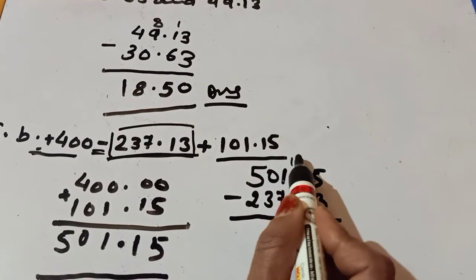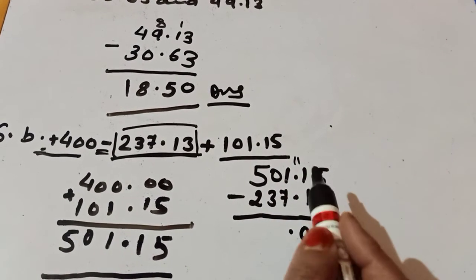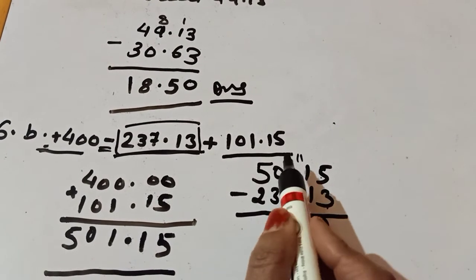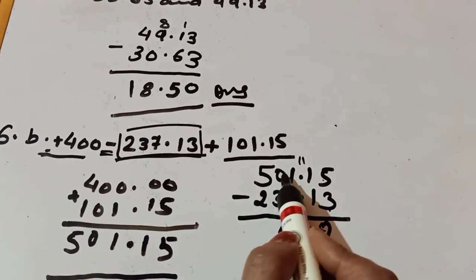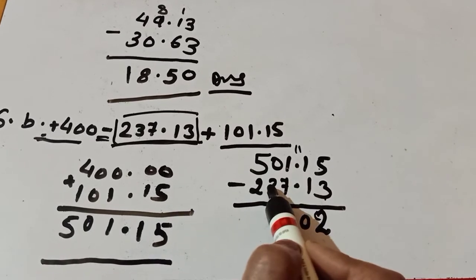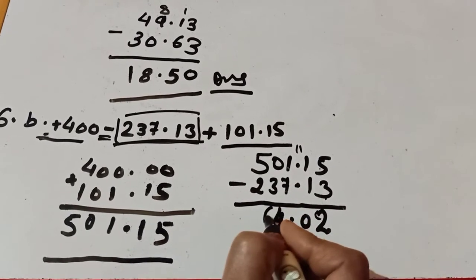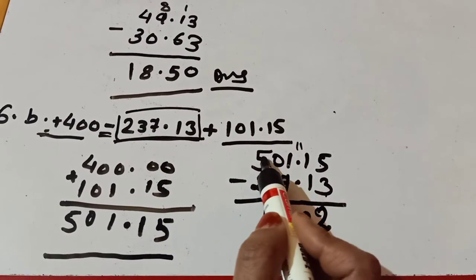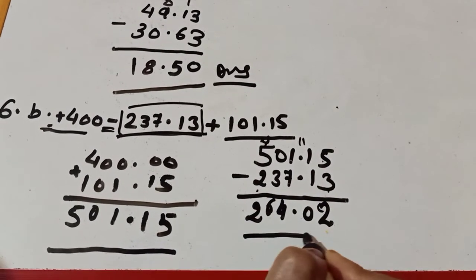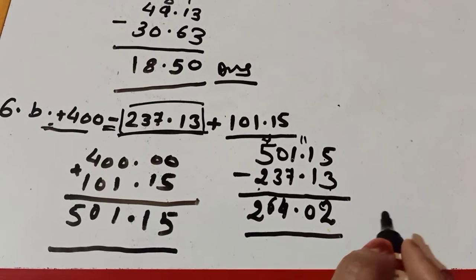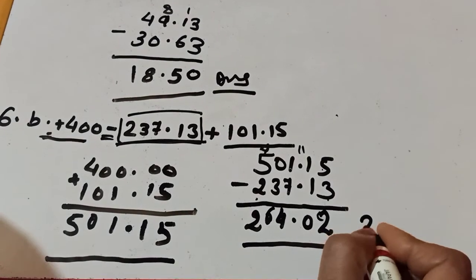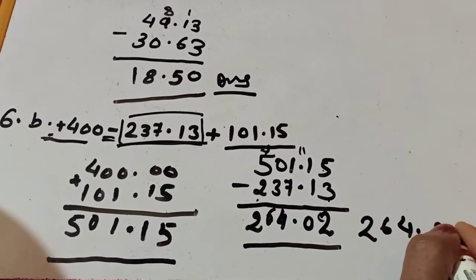And after that point, 1 minus 7 not possible. We will take 1 carry. And after that it is 11. 11 minus 7 is equal to 4. And when we take carry here, 9 left. 9 minus 3 is equal to 6. And we take 1 carry. Here 4. 4 minus 2 is equal to 2. So basically, the answer of this question, this simplification, is 264.02.